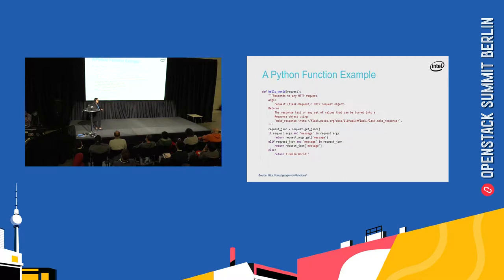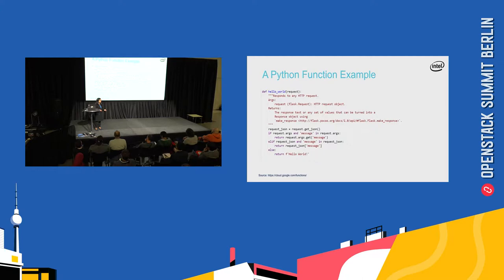Here is an example of a Python function — the source is from Google Cloud Functions. The developer has written just a hello world function and can run this function on any of the cloud providers and get the output. It's a single piece of code running a hello world program. There are multiple providers for function as a service today, like IBM OpenWhisk, Google Functions, and AWS Lambda.